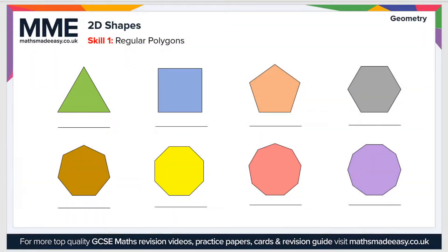Welcome to the Maths Made Easy tutorial on 2D shapes. There are four topics in this video. The first is regular polygons. A polygon is a 2D shape with straight sides, and a regular polygon is one where all the sides are the same length. A three-sided regular shape is known as an equilateral triangle.